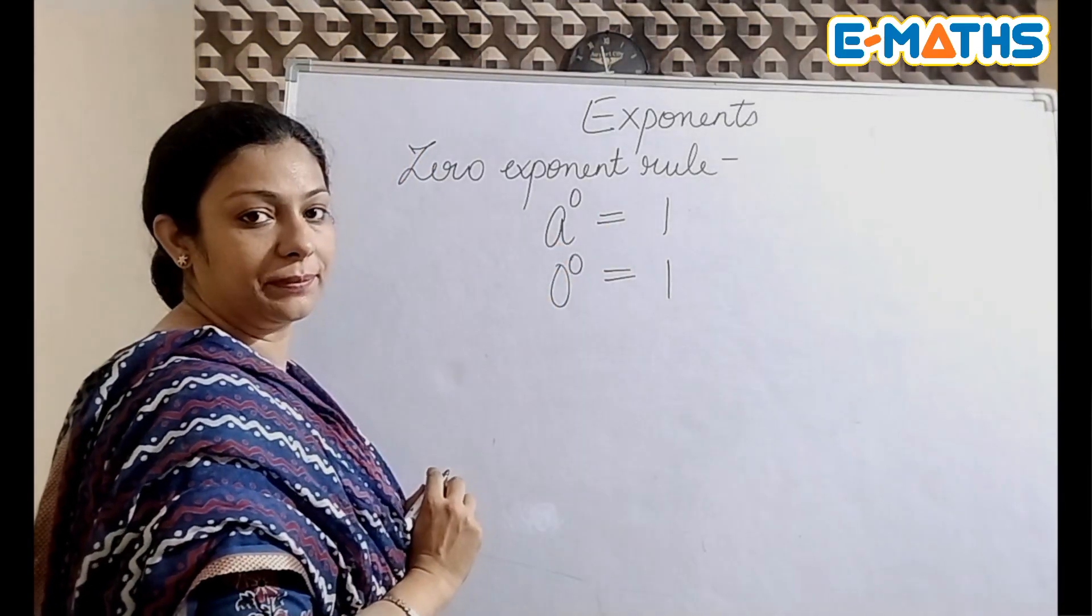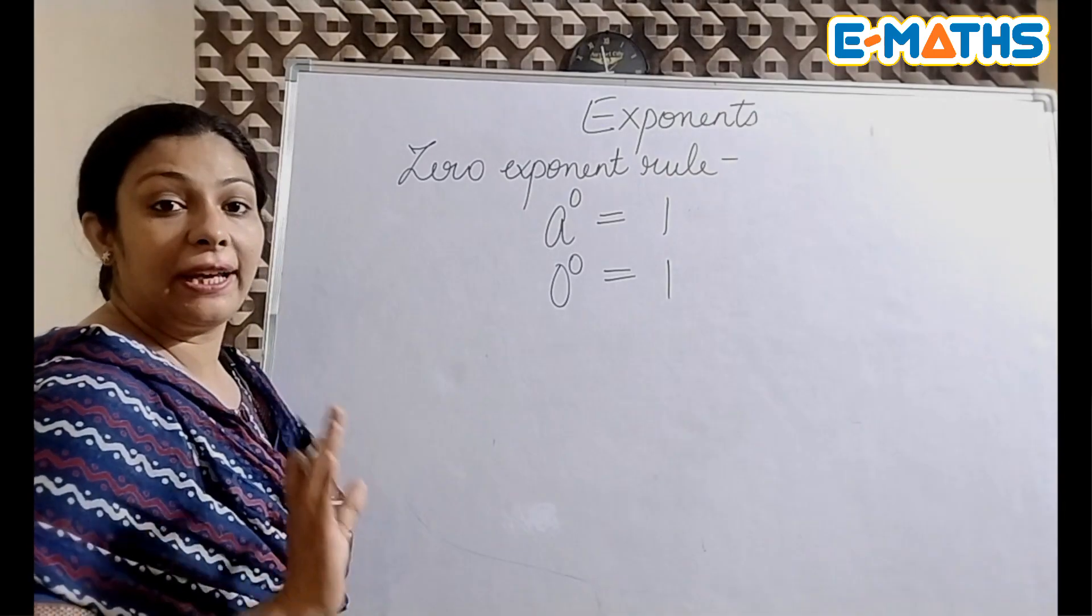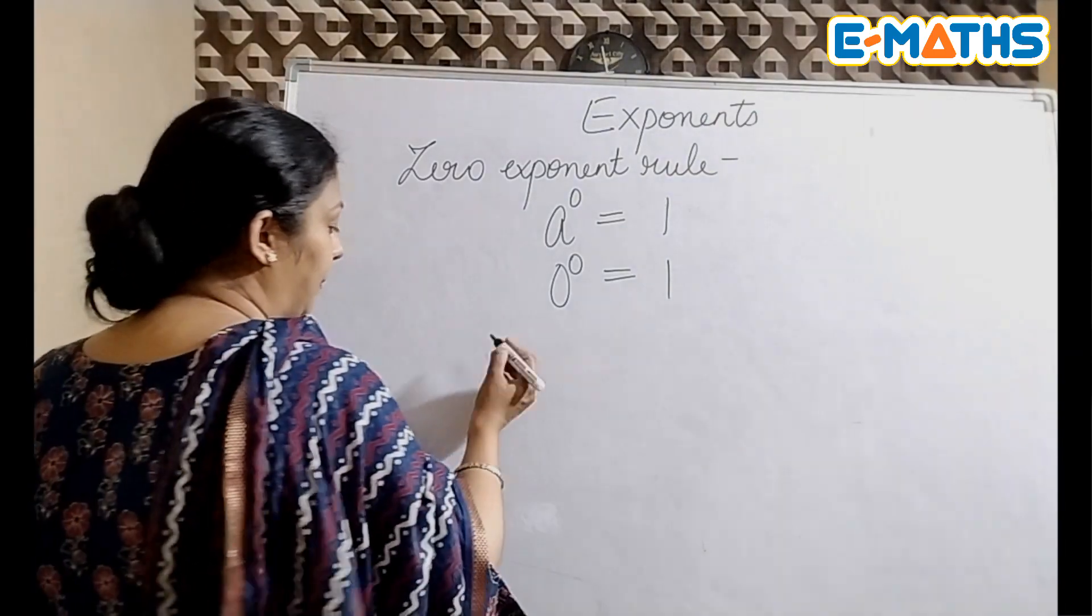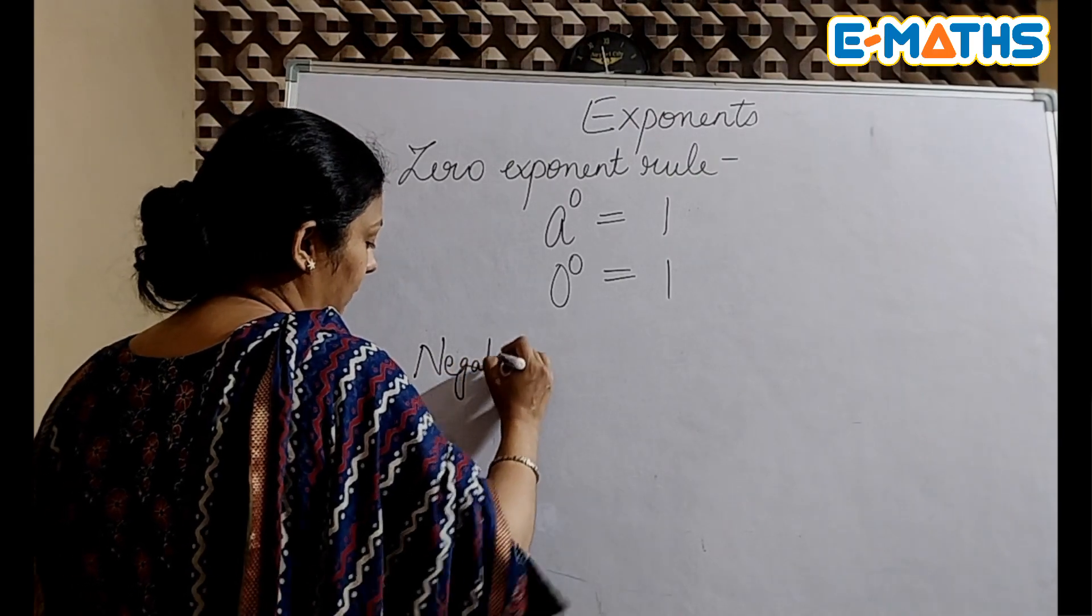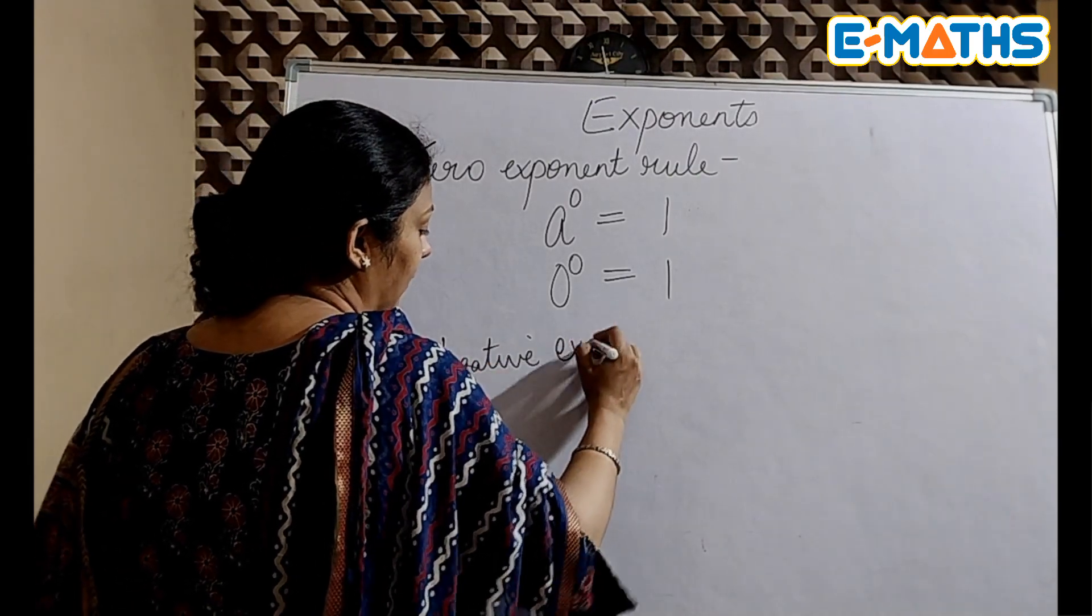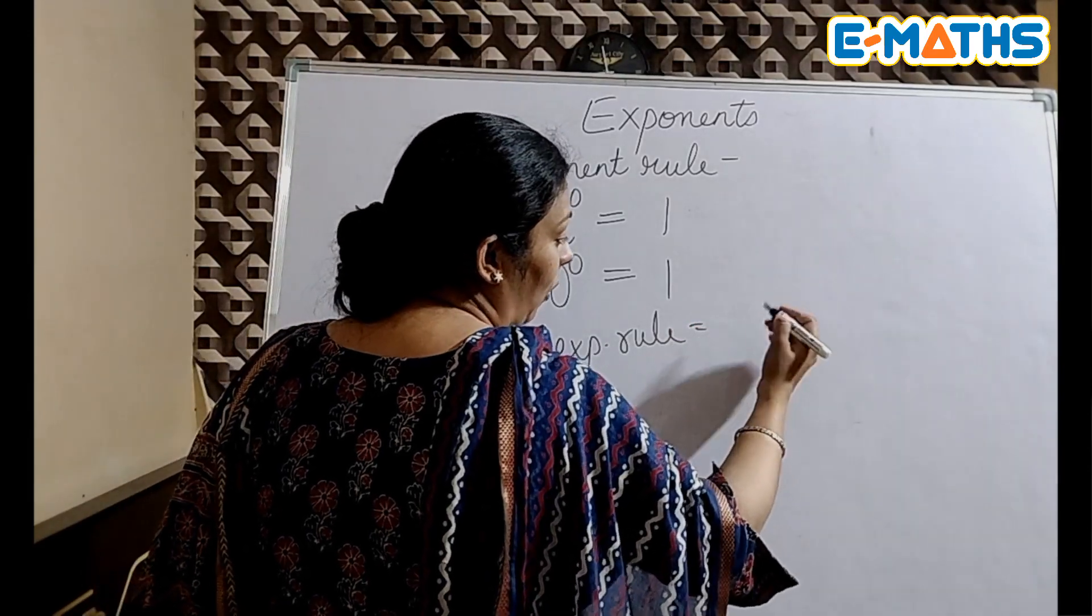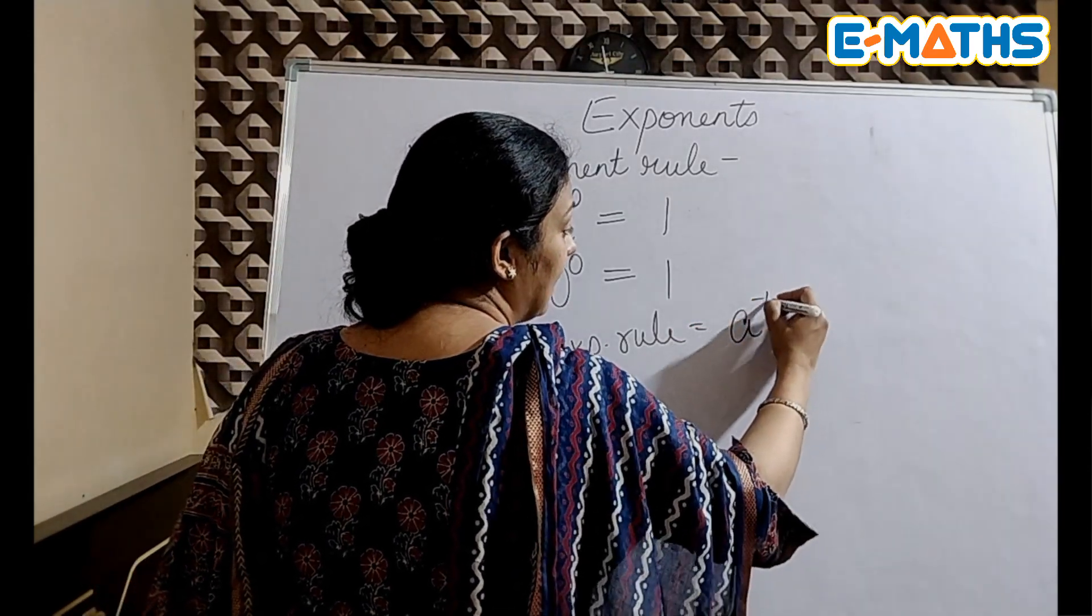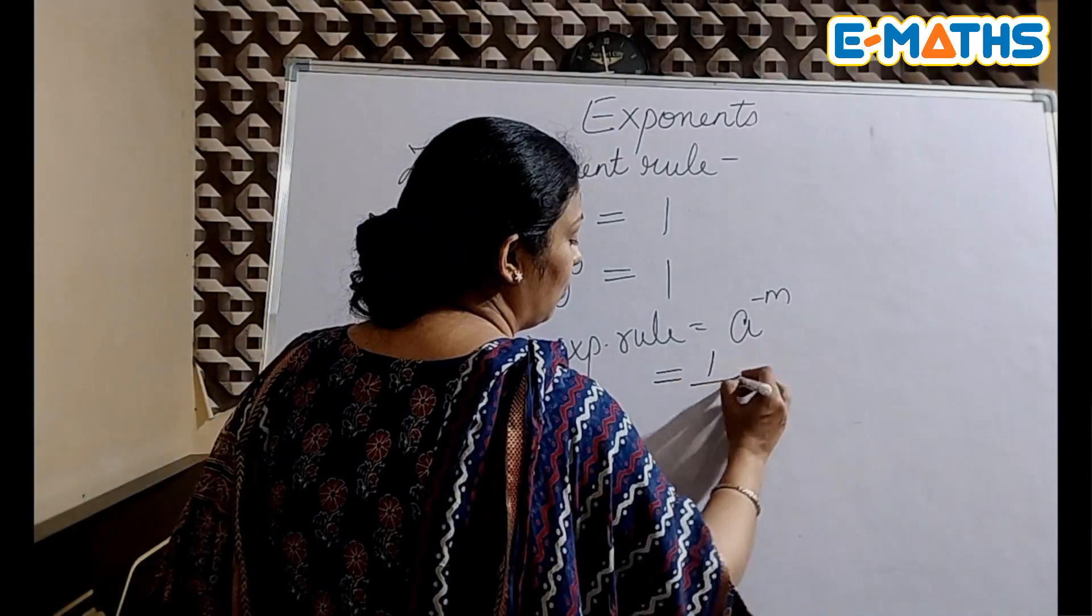Similarly, this can be in division as well, and then a bracket and there is a power outside the bracket. When you will open it up, it will again come on both the variables, on the numerator and the denominator. Then we have the zero exponent rule.